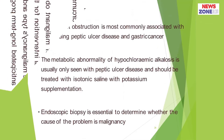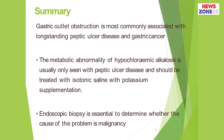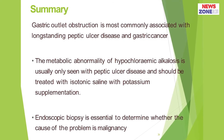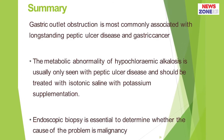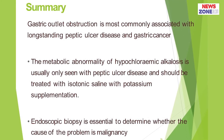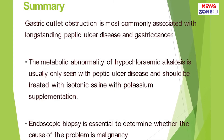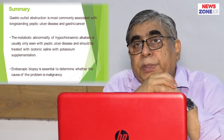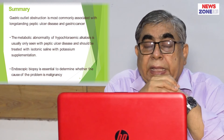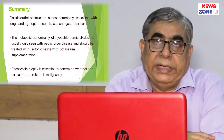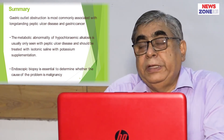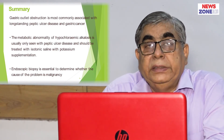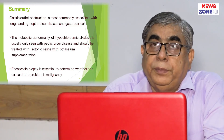Gastric outlet obstruction is most commonly associated with long-standing peptic ulcer disease and gastric carcinoma. The metabolic abnormality of hypochloraemic alkalosis is usually only seen with peptic ulcer disease and should be treated with isotonic saline with potassium supplementation. When gastric outlet obstruction is due to gastric carcinoma, the metabolic abnormality is less prominent, as it mainly occurs in pyloric stenosis resulting from peptic ulcer disease.